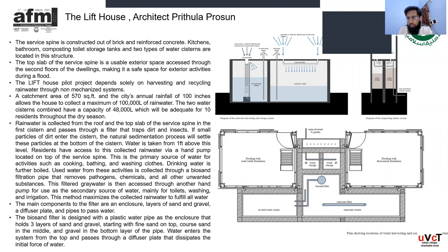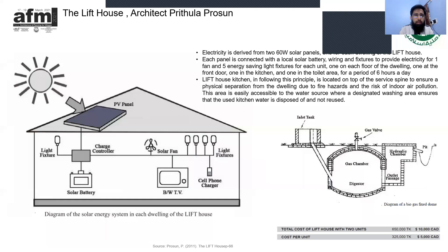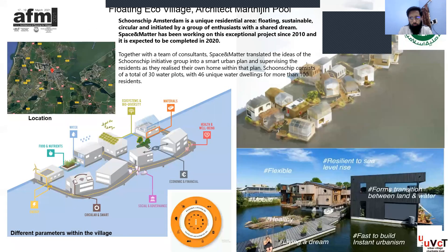Composting toilets are used where waste is diverted directly into guidance units for biomass collection. Two solar panels of 60 watts each are used — one solar panel per household.